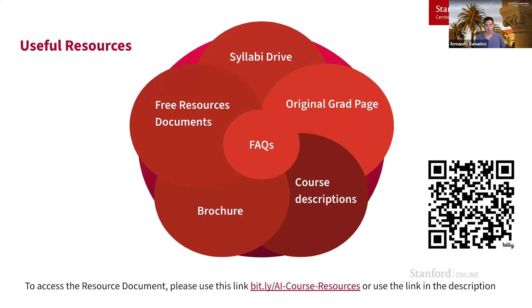Here we've gathered a bundle of resources to help you get a better picture of what to expect — find the link in the description of this video. If you're curious about assignments, you can look at the syllabi, or if you're more curious about the level of rigor, you can browse the grad assignments in the free resources section. For a general overview, check out the brochure, and for general questions about the program, check out the AI ProEd FAQ. Thanks for listening to how to build your personalized pathway within our AI Professional Program — until next time.